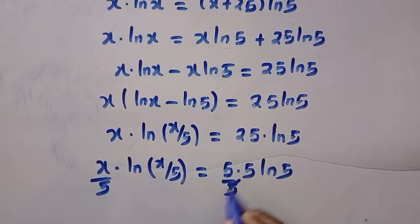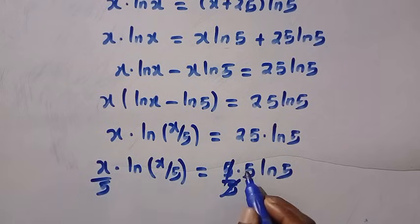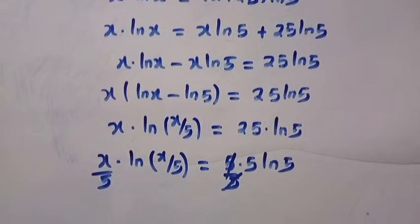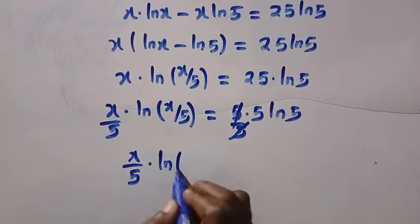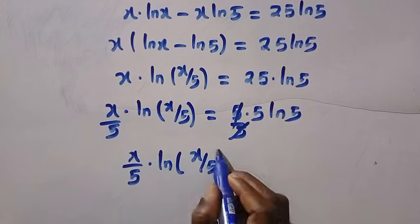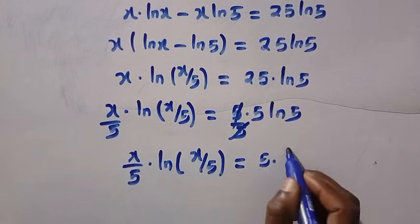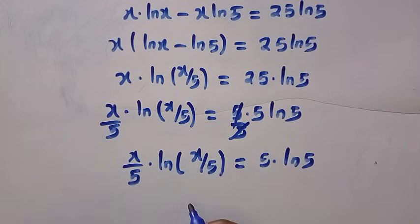So dividing by 5. This cancel this. I divided this by 5 because of this x over 5. So therefore we have x over 5 multiplied by ln x over 5 equals 5 multiplied by ln 5.